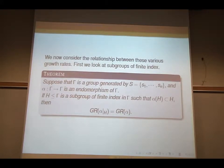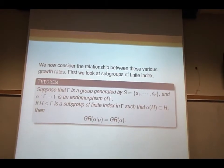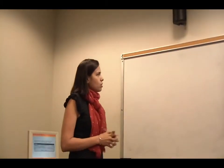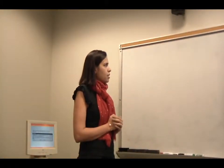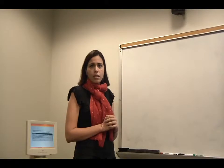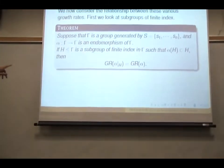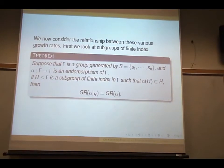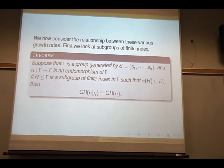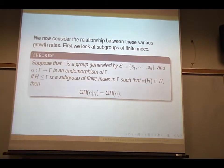So after thinking about several definitions, let's see how we can connect, we can compute the growth rate on quotient or subgroups. So the first result is that if you have a subgroup of finite index in the finitely generated group, also finitely generated H, such that alpha(H) is a subset of H, which is kind of preserves it, then growth rate of alpha restricted to H is the growth rate of alpha. So they are the same.